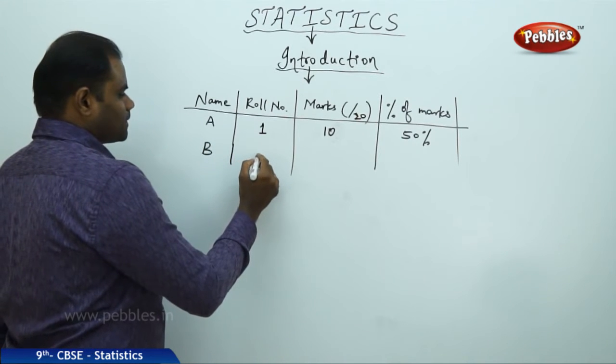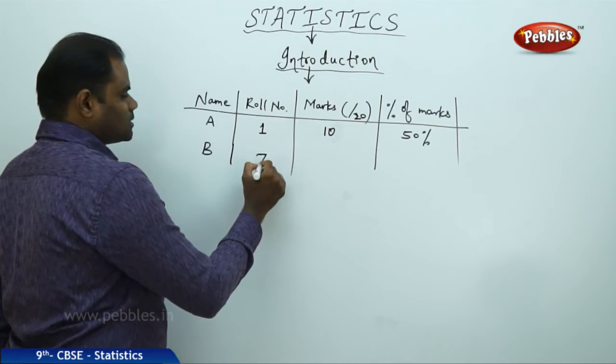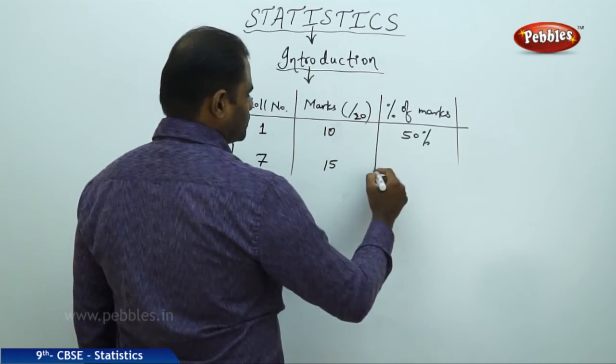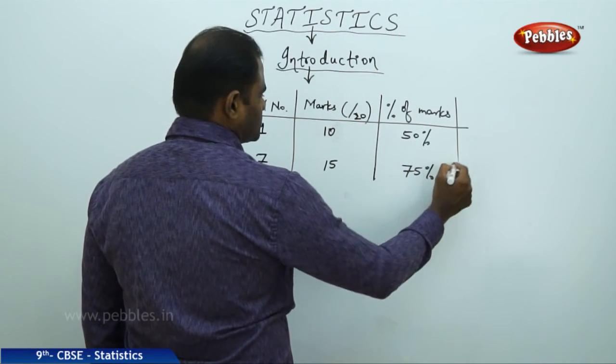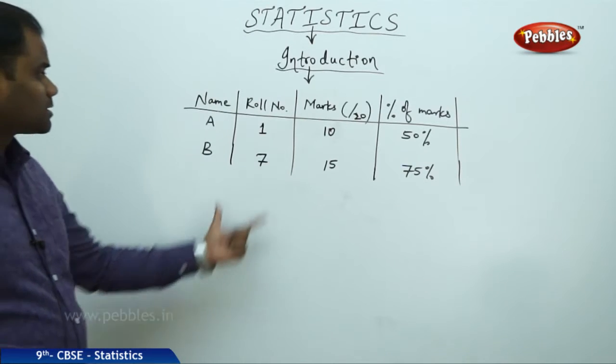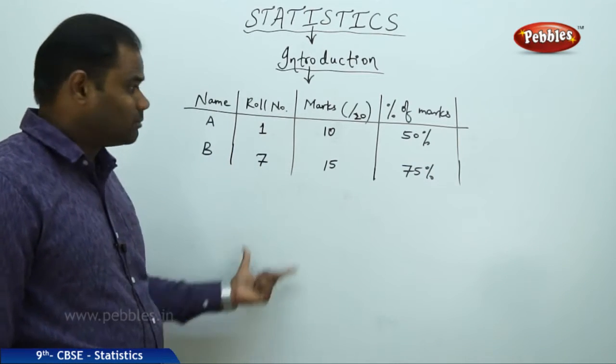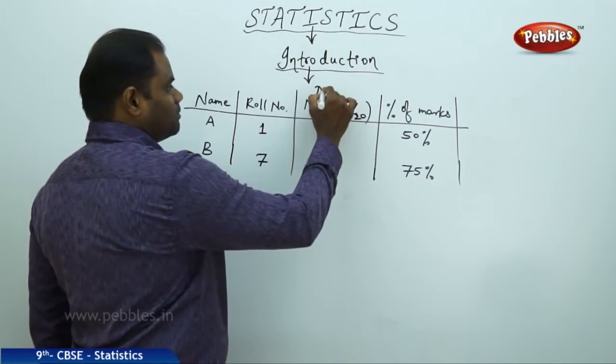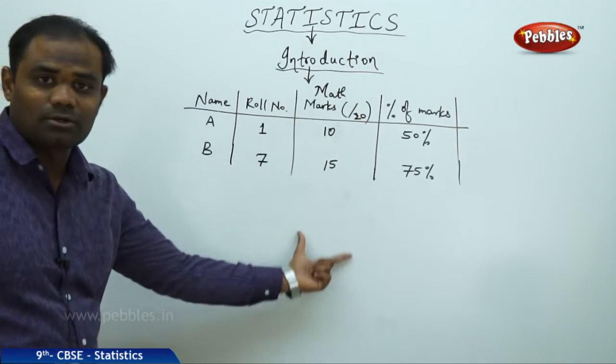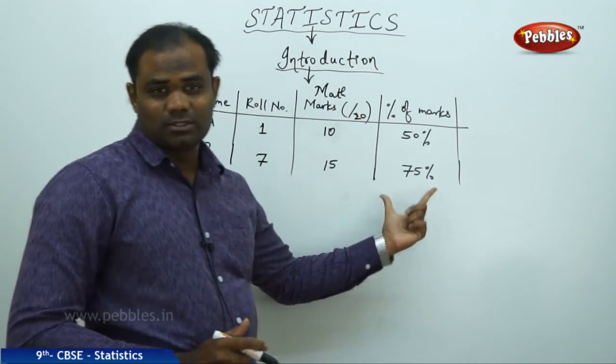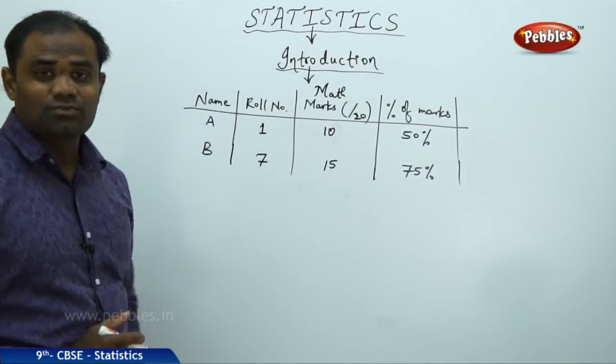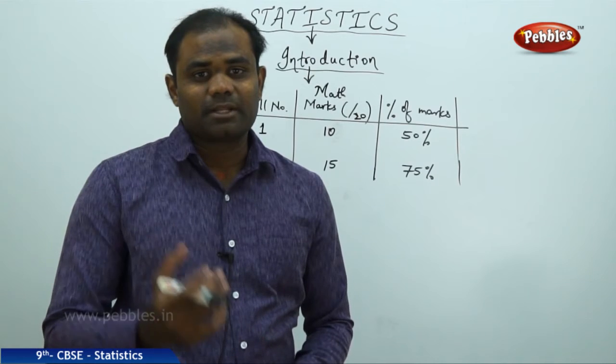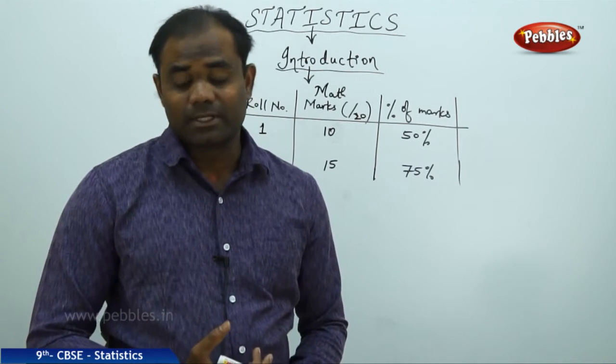So this collection of the names, their respective roll numbers, their marks obtained for 20 marks in the math subject, and the percentage of those marks is what the teacher usually does before they prepare the progress card. This is one of the purest and best examples to understand statistics.